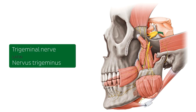But what exactly does the name trigeminal mean? Tri means three, or having three, which in this case means that the trigeminal nerve has three major branches. The ophthalmic nerve, which you can see a little bit here.